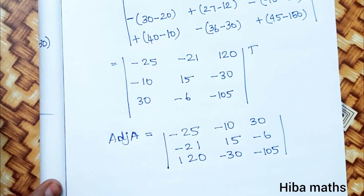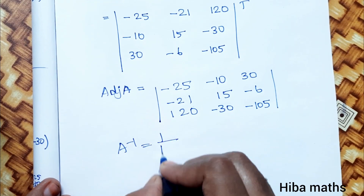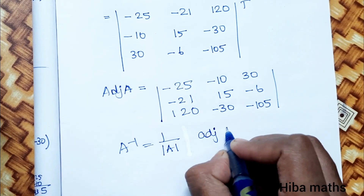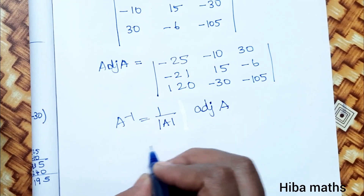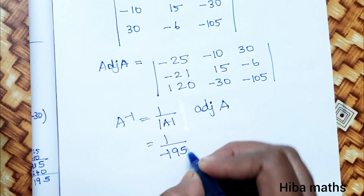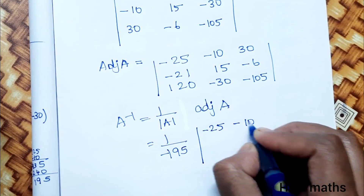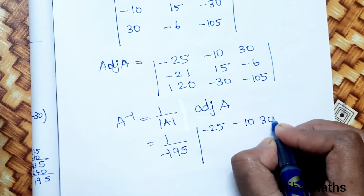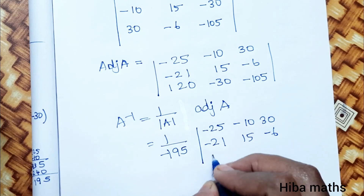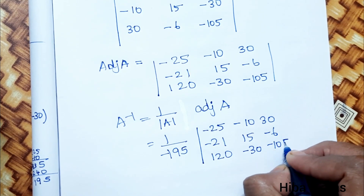A inverse is equal to 1 divided by the modulus of A, times the adjoint of A. So A inverse = (1 / −195) times the matrix [−25, −10, 30; −21, 15, −6; 120, −30, −105].